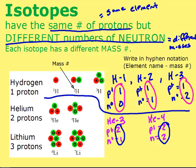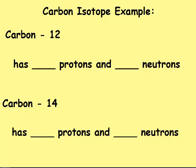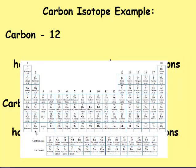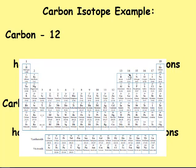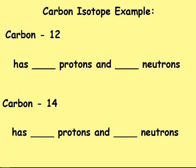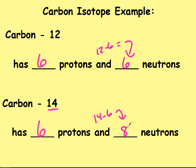For lithium isotopes, both have three protons — if you didn't have three protons, it would no longer be lithium. Only the number of neutrons changes. For the carbon isotopes, the atomic number is 6, so both have 6 protons. Carbon-12 has 12 minus 6 = 6 neutrons; carbon-14 has 14 minus 6 = 8 neutrons. These are isotopes of each other — same element but different masses.